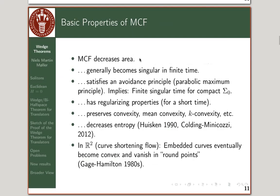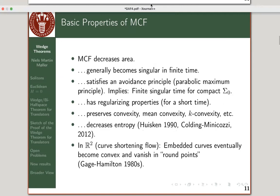Here is a list of basic properties of the mean curvature flow: it decreases area, it becomes singular in finite time in general, it satisfies the avoidance principle as a consequence of the parabolic maximum principle — and that's where the finite singular time comes from for compact surfaces. It also has instant regularizing properties, preserves various forms of convexity, and decreases entropy. No matter how complicated a curve you start with, it eventually becomes convex and vanishes in a round point.